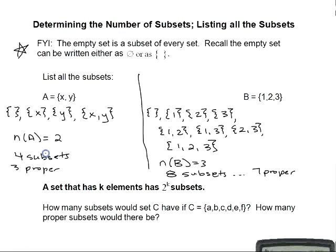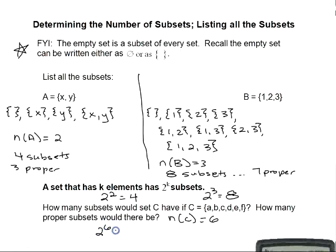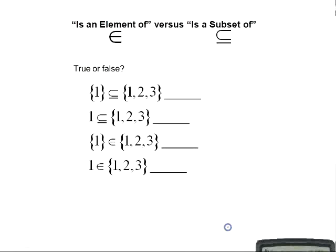A set with k elements has 2^k subsets. Set A had 2 elements: 2² = 4 subsets. Set B had 3 elements: 2³ = 2×2×2 = 8 subsets. If set C contains the elements {A, B, C, D, E, F} — six elements — then it has 2⁶ = 64 subsets, of which 63 are proper subsets. To find the number of proper subsets, simply subtract one from the total number of subsets.